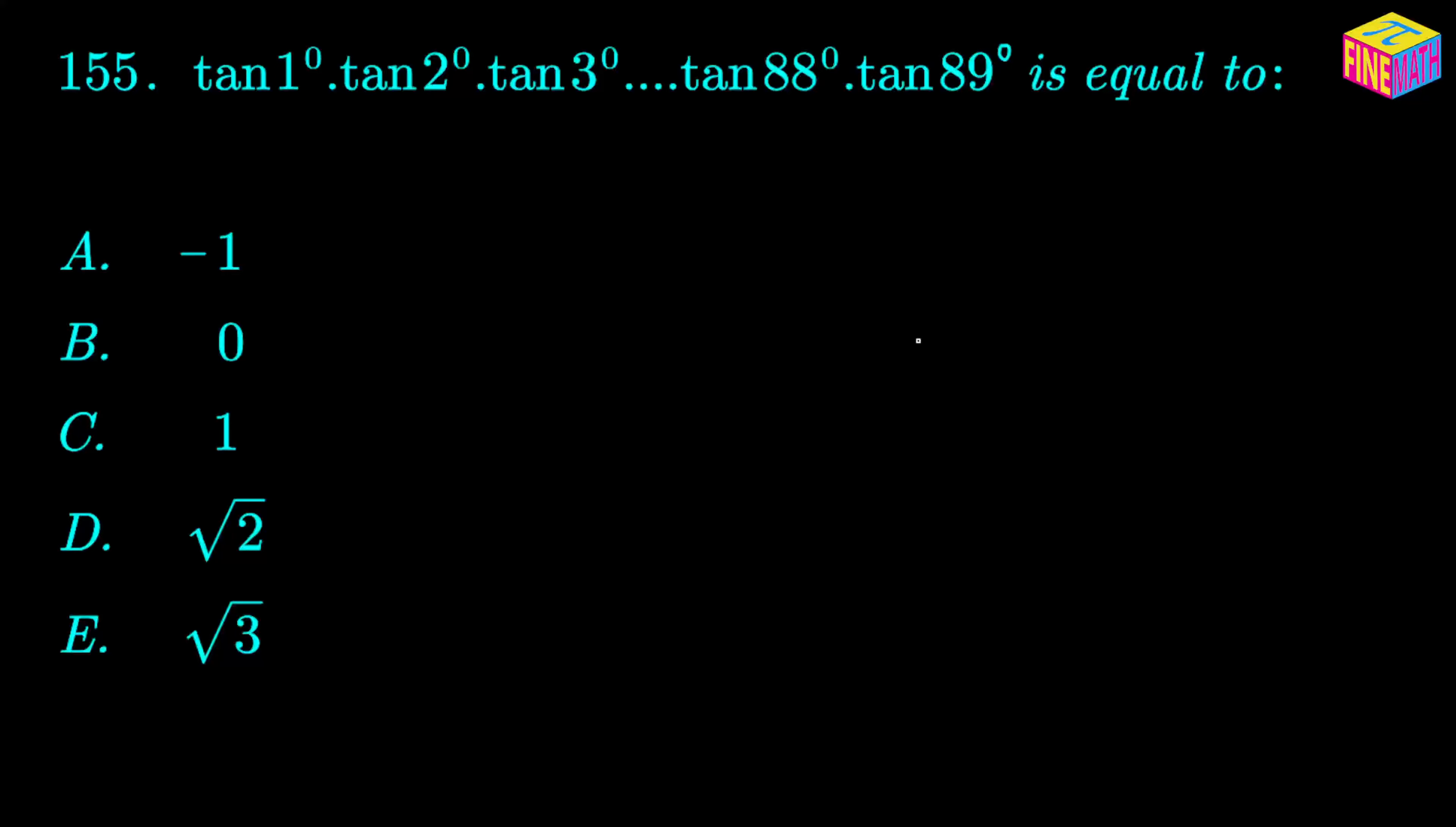Now in this problem, there is a pattern that we can see: the value of the angle in the first tangent ratio, which is 1 degree, and the value of the angle in the last tangent ratio, which is 89 degrees—the sum of these two angles is actually 90 degrees. As you can see, 1 degree and 89 degrees, their sum is 90 degrees.